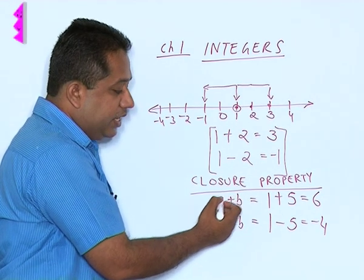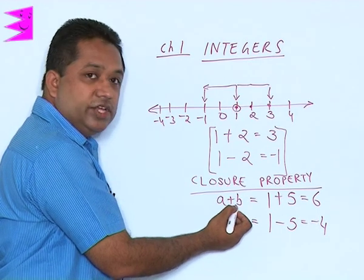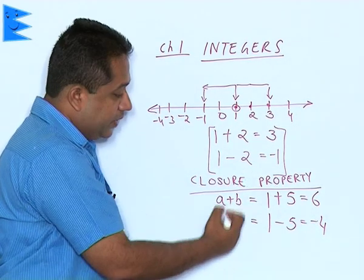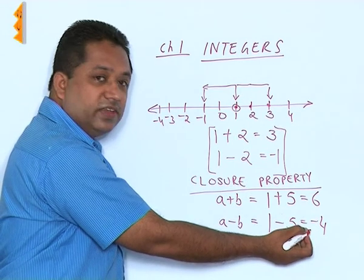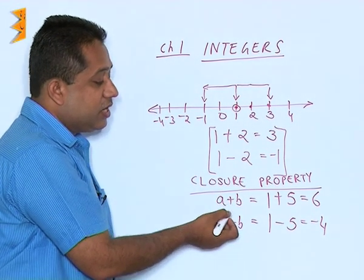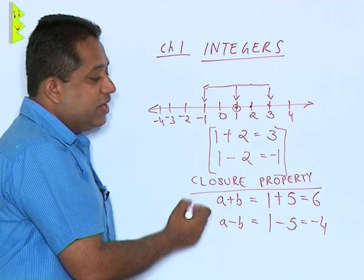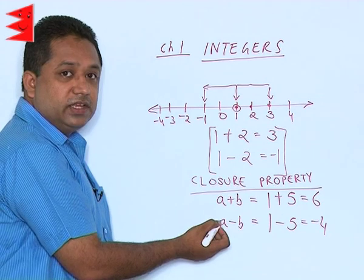So we can say that the closure property is valid for subtraction also in integers. Closure property: a plus b is giving us an integer, a minus b is also giving us an integer. So we can say addition and subtraction are closed in integers. We can verify other properties of integers as well.